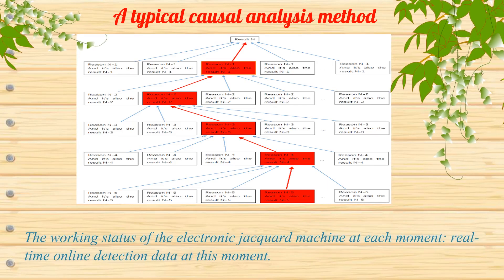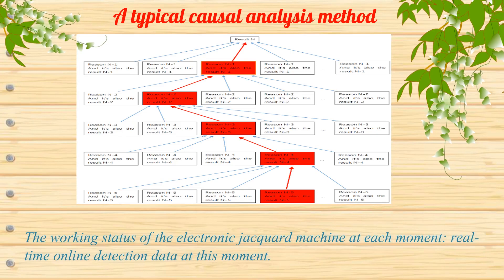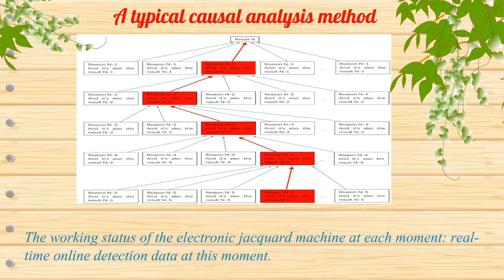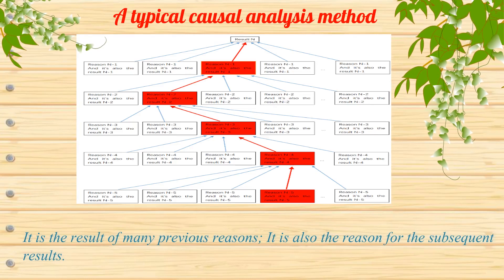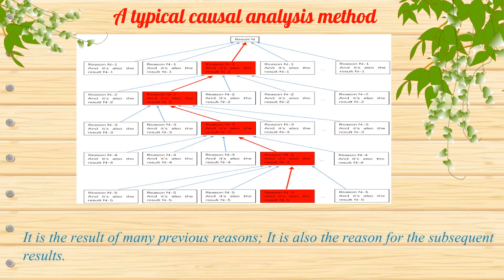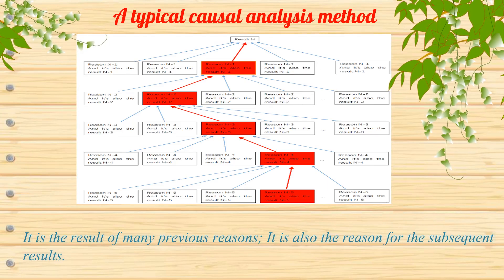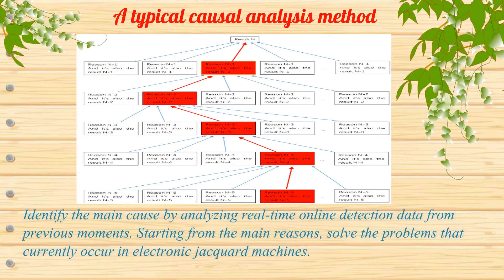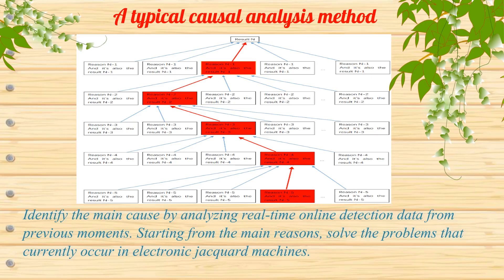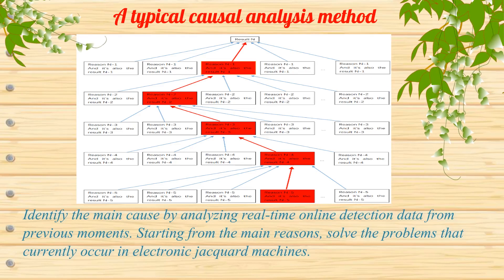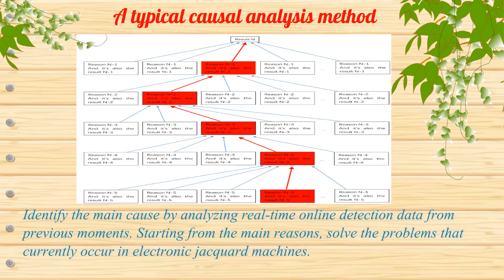The working status of the electronic jacquard machine at each moment, and the real-time online detection data at that moment, is the result of many previous reasons and also the reason for subsequent results. Identify the main cause by analyzing real-time online detection data from previous moments, then starting from the main reasons, solve the problems that currently occur in the electronic jacquard machine.